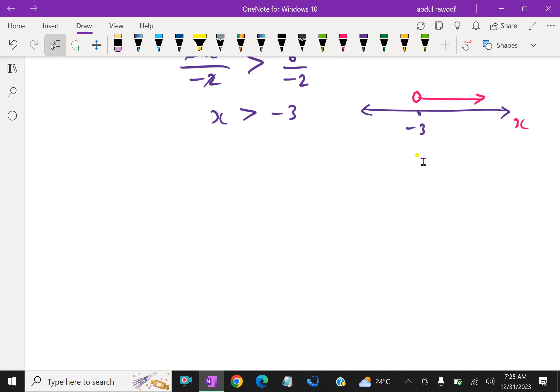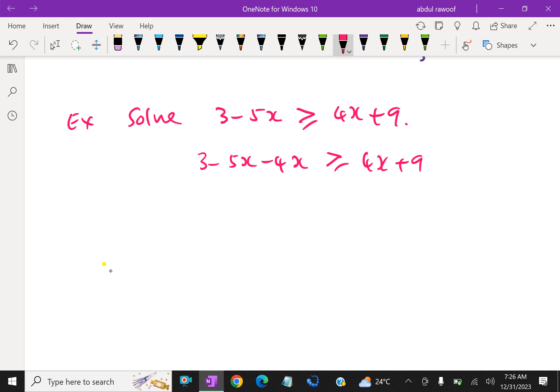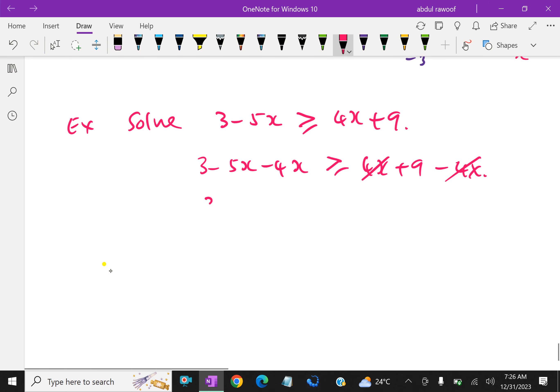Now we will do both sides with x. The example is solve 3 minus 5x is greater than or equal to 4x plus 9. Look at here, both sides have x, so first we have to subtract 4x from both sides. 3 minus 5x minus 4x, 4x plus 9 minus 4x, which means minus 4x plus 4x cancel. So 3 minus 5x minus 4x collecting gives minus 9x, 9.